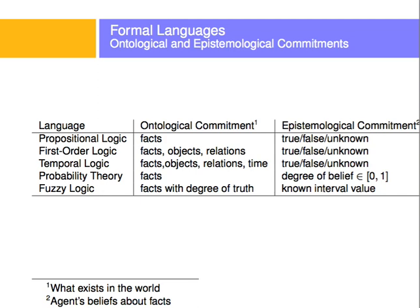There are several kinds of representing facts and things in computer science. The language of propositional logic — which we have videos about earlier — represents facts. It recognizes the world as facts, and the agent can believe they're true, false, or unknown. In first-order logic, which is what we're going to talk about today, there will be facts, objects, and relations, and the agent's beliefs about those facts will also be true, false, or unknown.